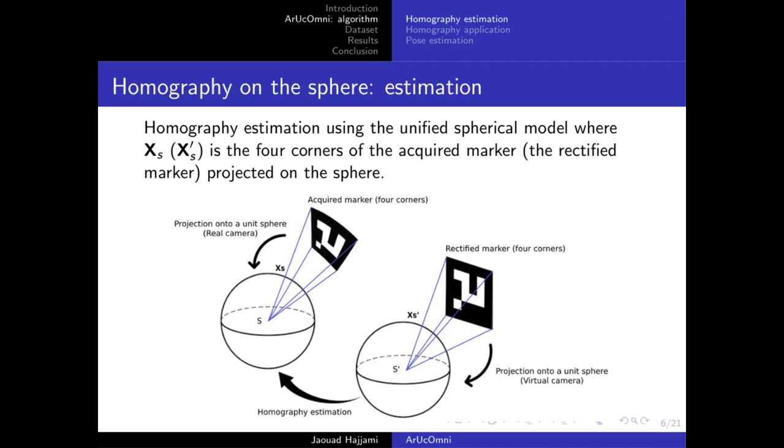For that, we project the four corners of both the acquired marker and its rectified version onto the sphere using the unified central projection. Then the homography is estimated in a way to map the spherical coordinates of the rectified marker to the acquired marker.